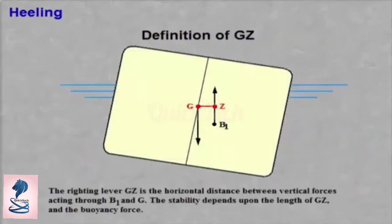The righting lever, GZ, is the horizontal distance between vertical forces acting through B1 and G. The stability depends upon the length of GZ and the buoyancy force.